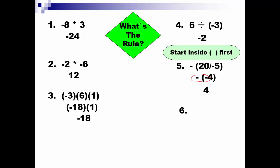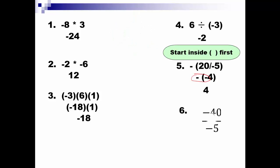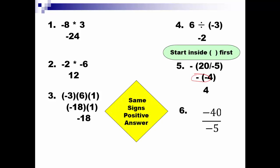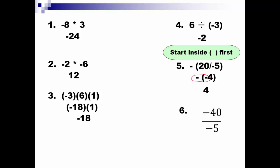Last one on this slide. It's division, and we know the signs are the same, so the answer will be positive. Negative 40 divided by negative 5 — a negative divided by a negative is a positive. 40 divided by 5 is 8, so the answer is positive 8.